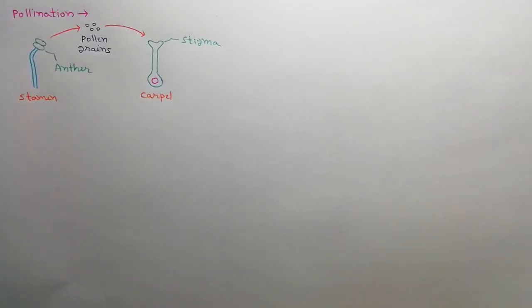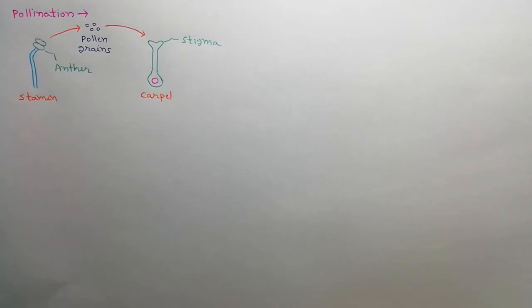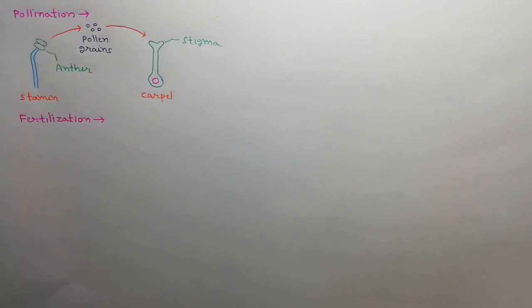Next, we will discuss about pollination. When anthers are matured, pollens are released by dehiscence. These pollens are then transferred onto the stigma by various agents — this process is called pollination. On the stigma, the pollen grain germinates and produces a pollen tube, which carries two male nuclei into the embryo sac of the ovule.